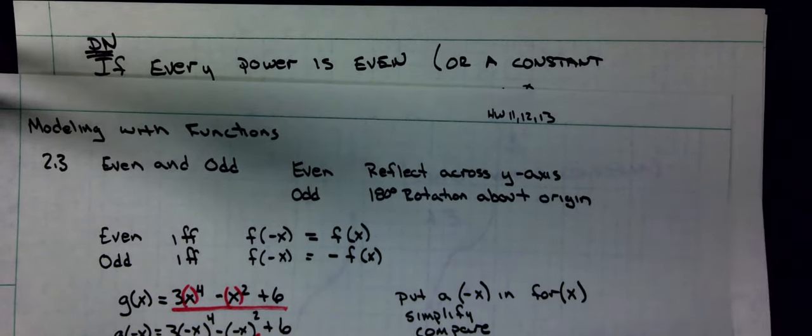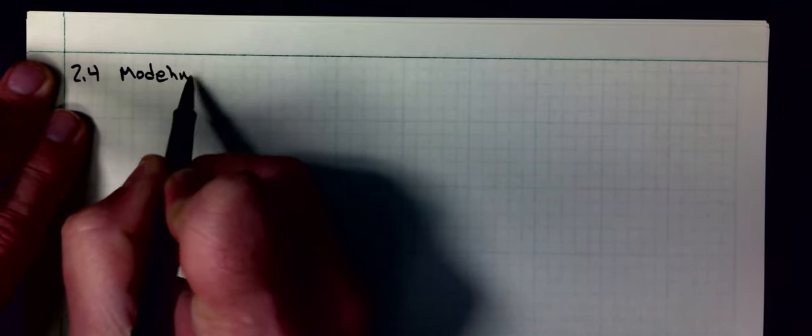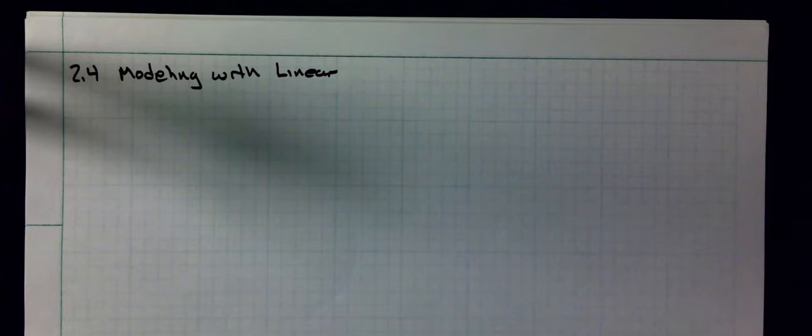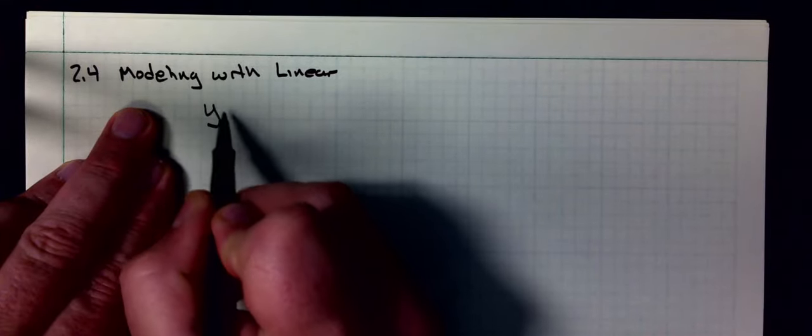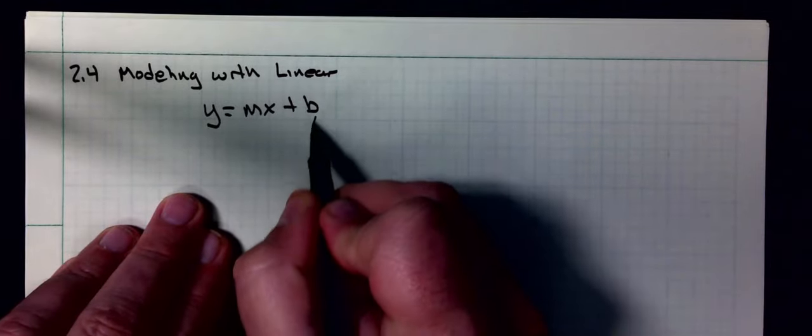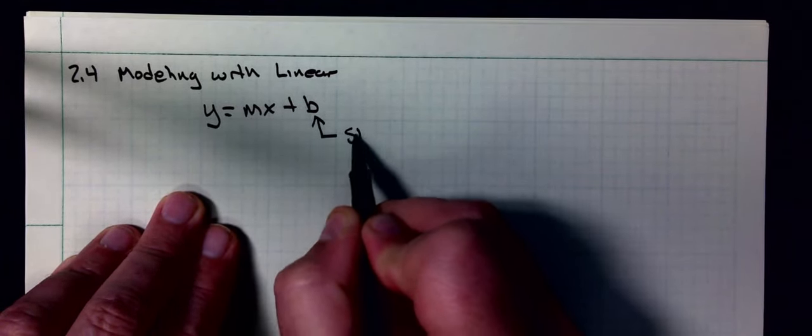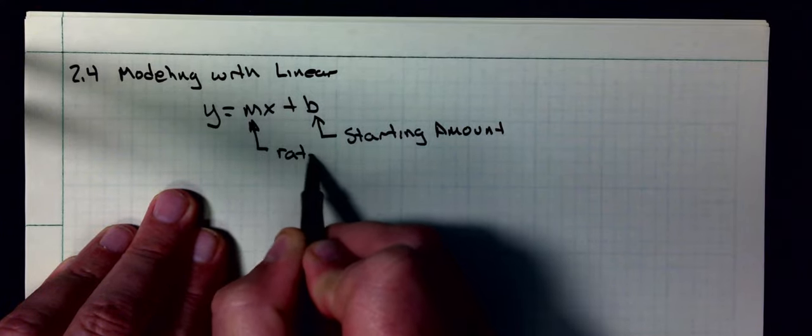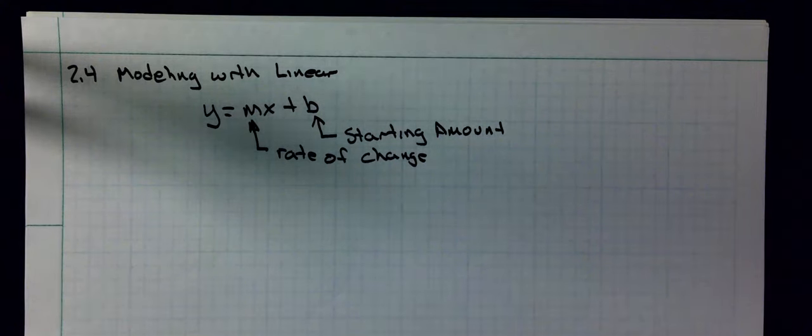Which brings us into 2.4. 2.4 is modeling with linear functions. These are things that we can write like y = mx + b. For this, b is my y-intercept. You can think about this as the starting amount. We know that the m is our slope, but this is our rate of change. In modeling, most cases it's going to be a story problem.